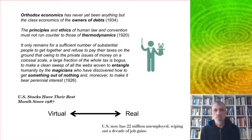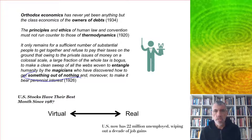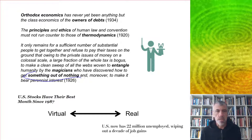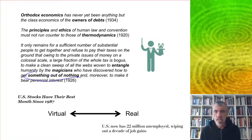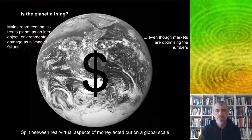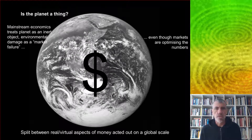His solution to these problems was basically to stop paying tax, in order to make a clean sweep of all the webs woven to entangle humanity by the magicians who have discovered how to get something out of nothing and moreover to make it bear perennial interest. I'm not sure that strategy would really work today, but the split between the virtual and the real which he highlighted was very evident in spring 2020, when we had two headlines at the same time: 'US stocks have their best month since 1987' and 'US now has 22 million unemployed.'